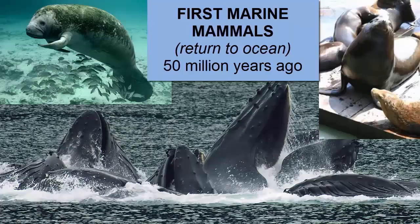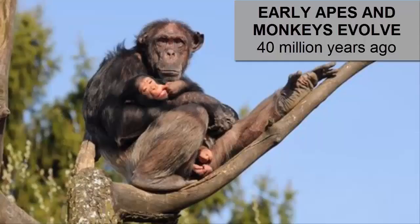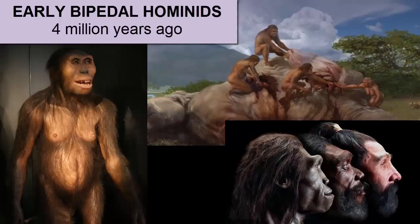50 million years ago, some land mammals returned to the ocean, evolving into whales, sea lions, seals, and other marine mammals. The earliest monkeys and apes evolved 40 million years ago, and the oldest evidence we have of early bipedal hominids is 4 million years ago.